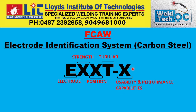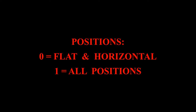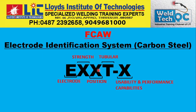As we have just seen in the photographs, the classification starts with E. E stands for electrode. The next digit represents the minimum tensile strength of the weld metal. The digit after that represents the welding position. Normally this will be one or zero — if it is zero, you can weld only in the flat and horizontal position.